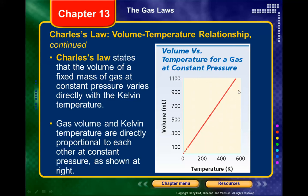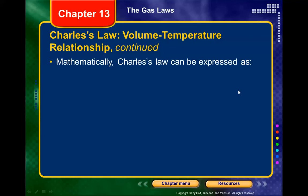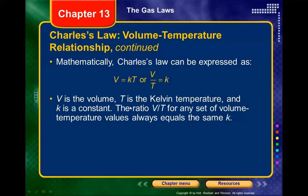This is a direct relationship on a graph. Mathematically: volume equals a constant times temperature, or equivalently, volume divided by temperature equals a constant. This ratio stays the same for any volume-temperature pair at constant pressure.